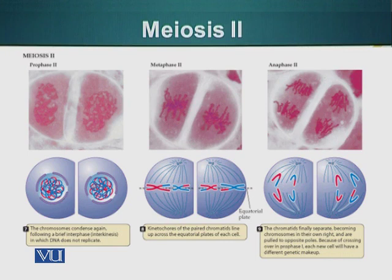At this stage, meiosis 2 is sort of similar to mitosis with two differences. Number 1, there is no DNA replication prior to the cell division or meiosis 2. Number 2, the sister chromatids in mitosis are identical. In meiosis 2, the sister chromatids are not identical.